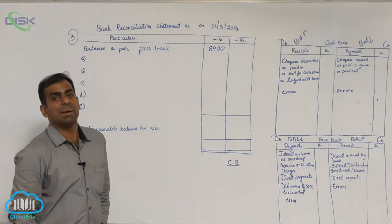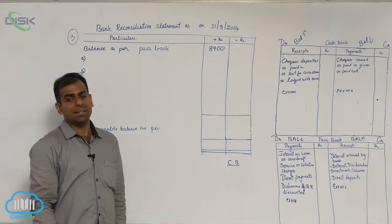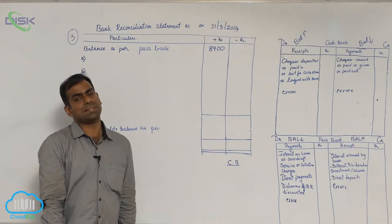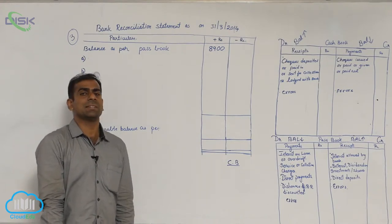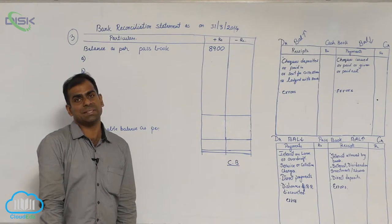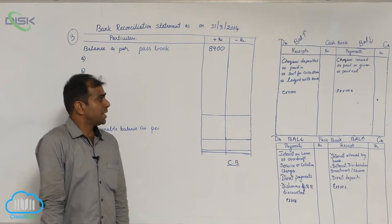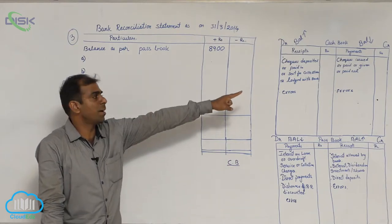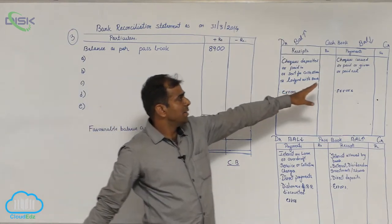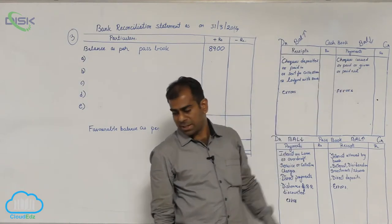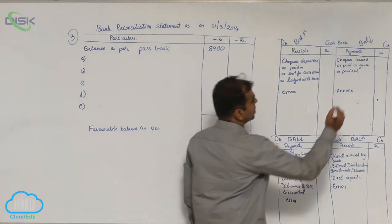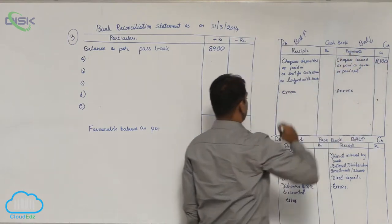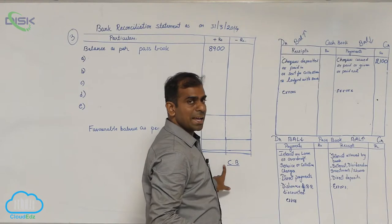Now, coming to first statement A, check issued but not yet presented for payment. I already discussed what is the meaning of not yet presented for payment. So check issued. Check in which format it is there. It is there in the cashbook format. Which side? It is there on the payment side. So let us enter the amount 2100 on payment side of cashbook. So our target is cashbook.